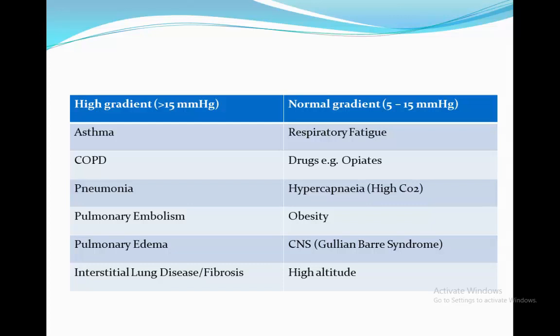Others, like pneumonia, pulmonary oedema, and interstitial lung disease, all decrease the diffusion of oxygen. When oxygen can't diffuse into the capillaries, it builds up in the alveoli, meaning there will be more oxygen in the alveoli than in the capillaries, and therefore there will be a high gradient.